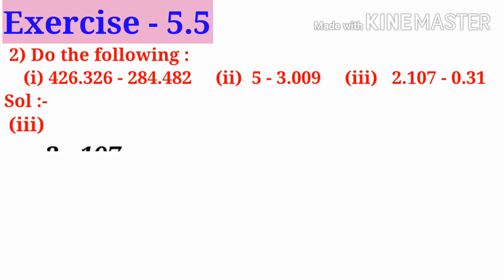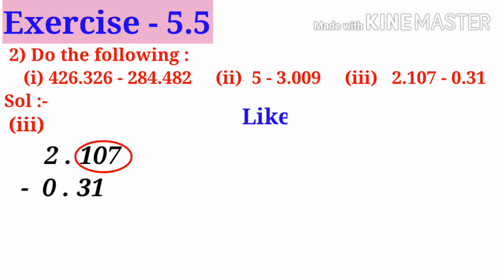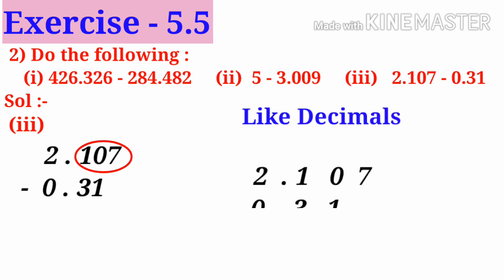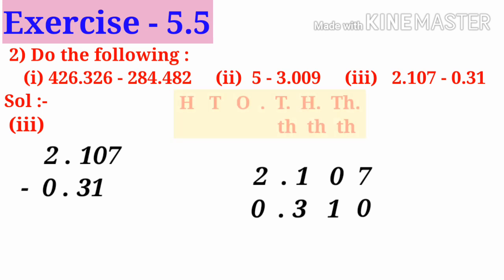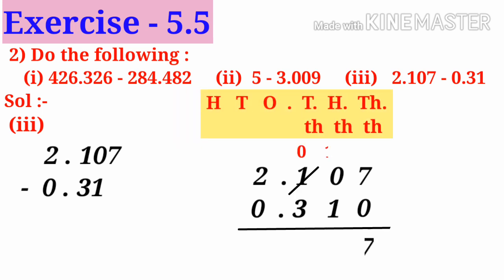Number 3: 2.107 minus 0.31. Observe that the maximum decimal places are 3. So to convert into like decimals, add one zero to the decimal part of the second fraction and place them in their exact place values. Subtracting: 7 minus 0 is 7, 10 minus 1 is 9, 10 minus 3 is 7, and 1 minus 0 is 1. So 1.797 is the answer.